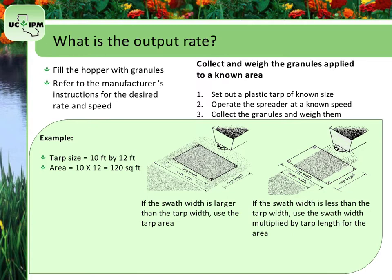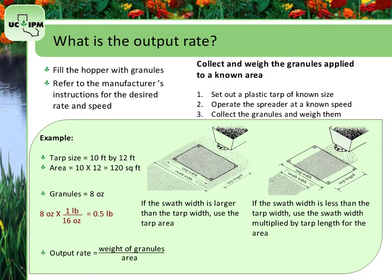Say that you collected 8 ounces of granules. Convert that to pounds with a conversion factor of 16 ounces per pound. Multiply 8 ounces by 1 over 16 ounces per pound to get half a pound of collected granules. Then, divide the weight of the granules collected by the area — that is the output rate. So, if we had 0.5 pounds applied over 120 square feet, then the resulting output rate is 0.004 pounds per square foot.